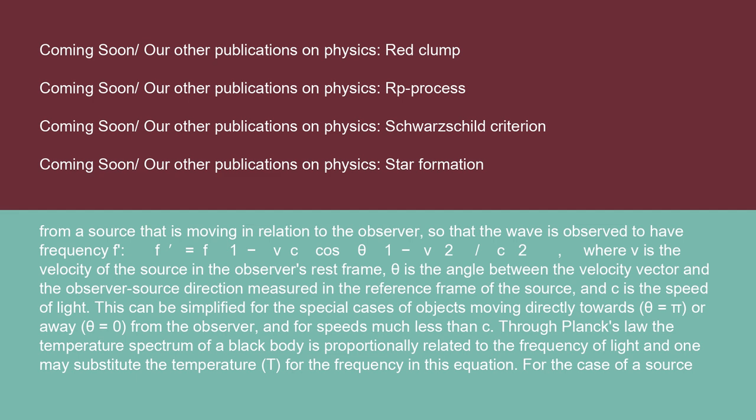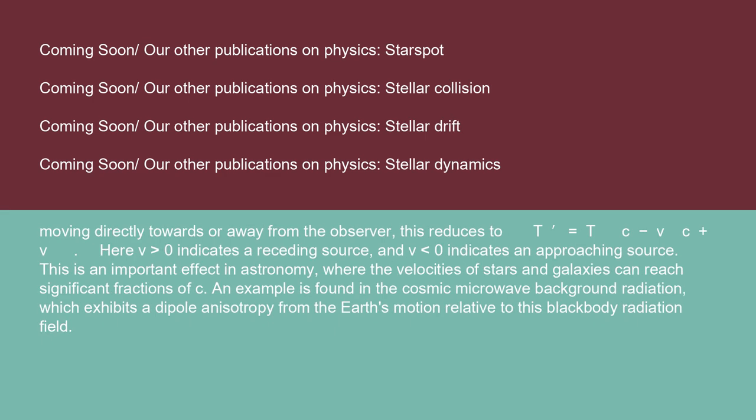Through Planck's law, the temperature spectrum of a black body is proportionally related to the frequency of light, and one may substitute the temperature T for the frequency in this equation. For the case of a source moving directly towards or away from the observer, this reduces to T' = T · √((c − v)/(c + v)). Here v > 0 indicates a receding source and v < 0 indicates an approaching source. This is an important effect in astronomy, where the velocities of stars and galaxies can reach significant fractions of c. An example is found in the cosmic microwave background radiation, which exhibits a dipole anisotropy from the Earth's motion relative to this black body radiation field.